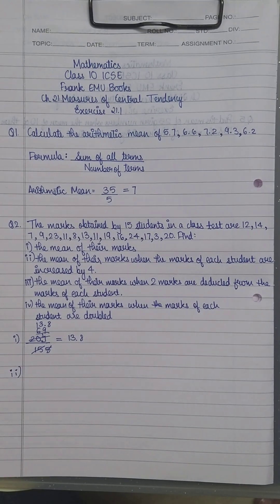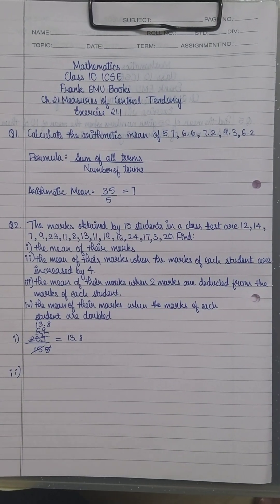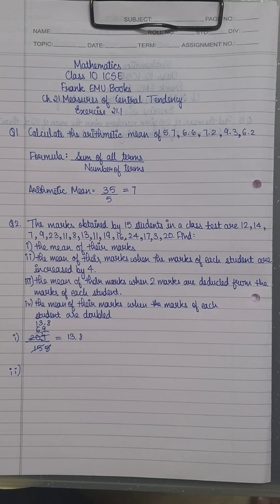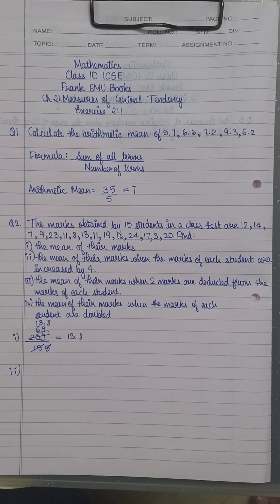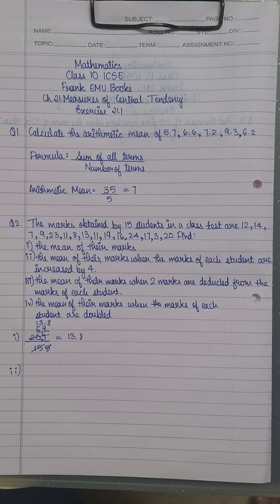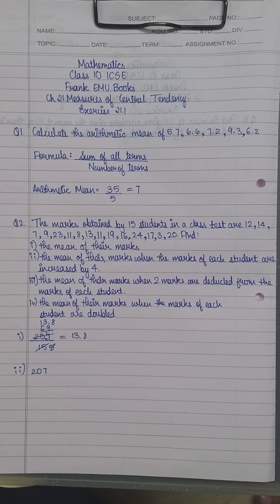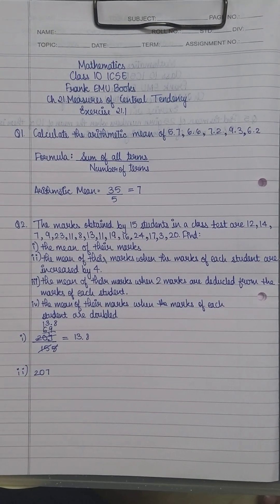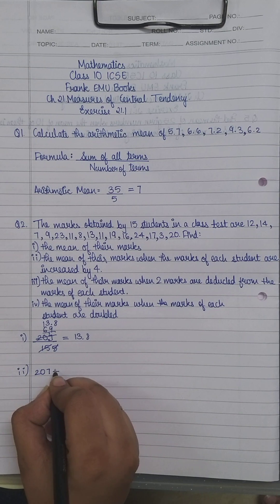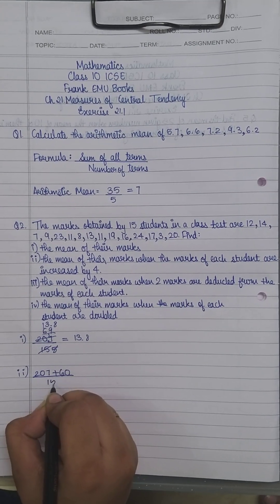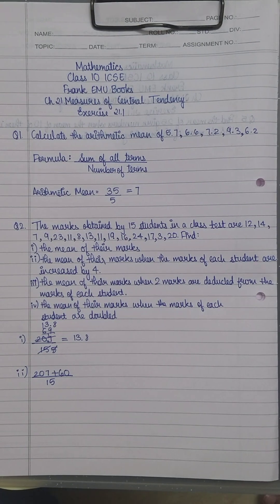Question 2b asks: what will be the mean when the marks of each student is increased by 4? That is, every student scores 4 marks more. You already had 207, and if all of them scored 4 marks more, it would be 15×4=60 more. The number of terms is still 15.